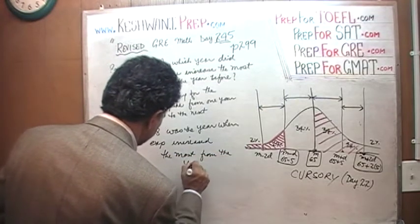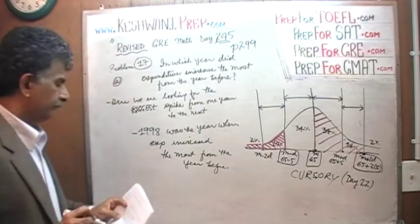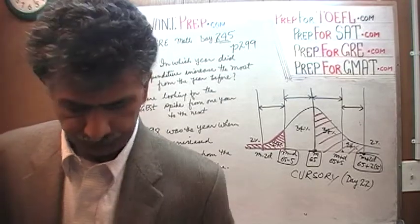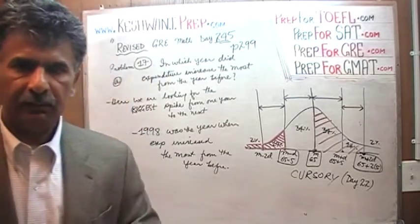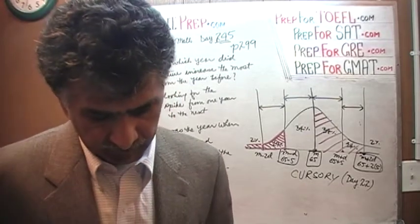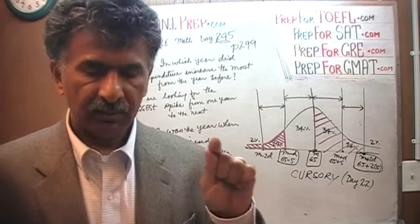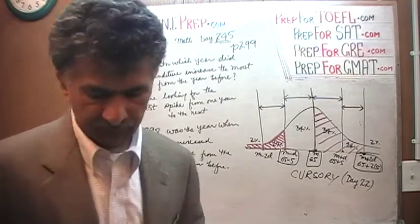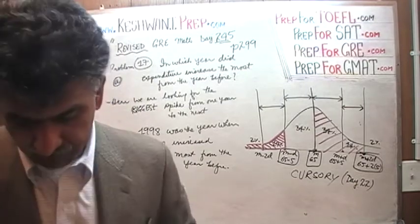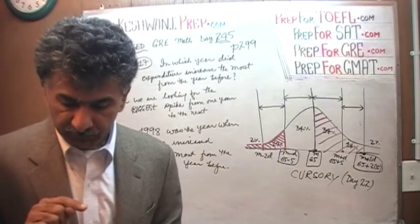And the biggest spike that you see from the year before. And to be careful as to how the question is worded. They are not asking in which year we saw the biggest spike. They are asking us where is the biggest spike from one year to the next year. And which year do you see that? The way they phrased it, it says, for which year did the total expenditure increase the most from the year before?